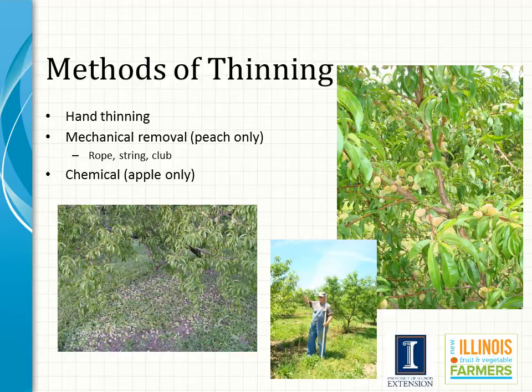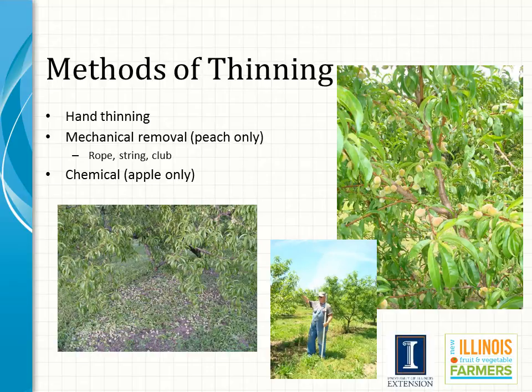Chemical thinning is almost exclusively used in apples. Commercial apple growers can spray their trees at the appropriate time with certain chemicals, which will cause some fruit to drop. It is a very precise operation, and either no thinning or over-thinning can result. Good results depend on selection of the correct chemical, rate, and time of application. Weather conditions before, during, and after application can influence results. When done properly, chemical thinning gives the best results of all the methods used, since it is done earlier than the others, and it is also the least expensive method.